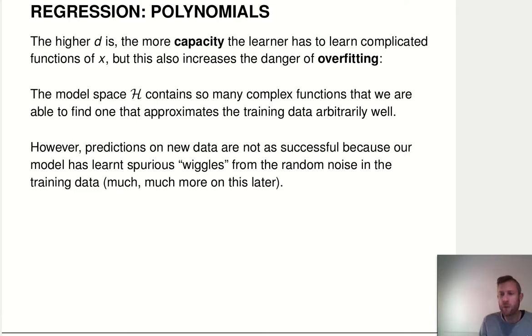If you then use that very complicated and wiggly model to predict on new data, it won't do so well. We call that—it doesn't generalize well—because it has, on top of all the true structure that might be in your training data, also learned all the random noise, and then it applies that to new data and that just doesn't work very well. Overfitting is a very important term in machine learning. We'll talk about that much more later on, but it's important to introduce this concept early on so that you are aware of that problem.